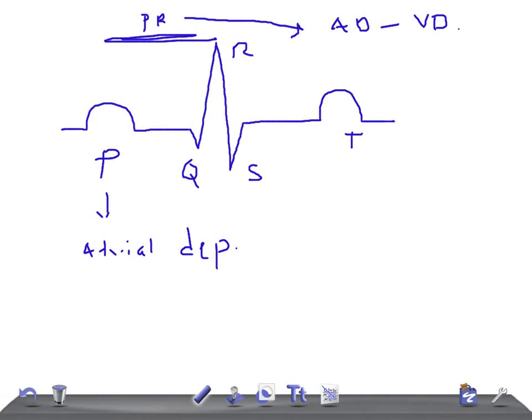The QRS complex is really very important. The QRS complex indicates ventricular depolarization. Note that while the PR interval marks the start of depolarization, the QRS complex represents the actual ventricular depolarization itself.